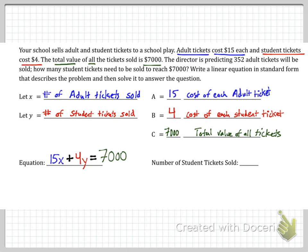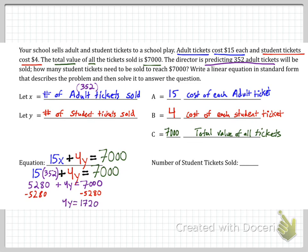And now we just need to solve. Well, we said the director is predicting 352 adult tickets will be sold. Adult tickets, that's our x up here. So this time, I'm plugging in the 352 for x. So let's put 352 there in place of x. Then we just can use our calculator and multiply that out. Subtract the 5280 from each side. Divide by four and we get y equals 430. So 430 student tickets are sold.